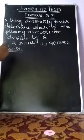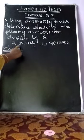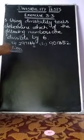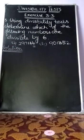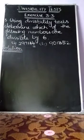Next, we have to check the rule for 3. What is the rule for 3? The sum of the digits must be divisible by 3 for the whole value to be divisible by 3. Only then can we say the given value is divisible by 6.